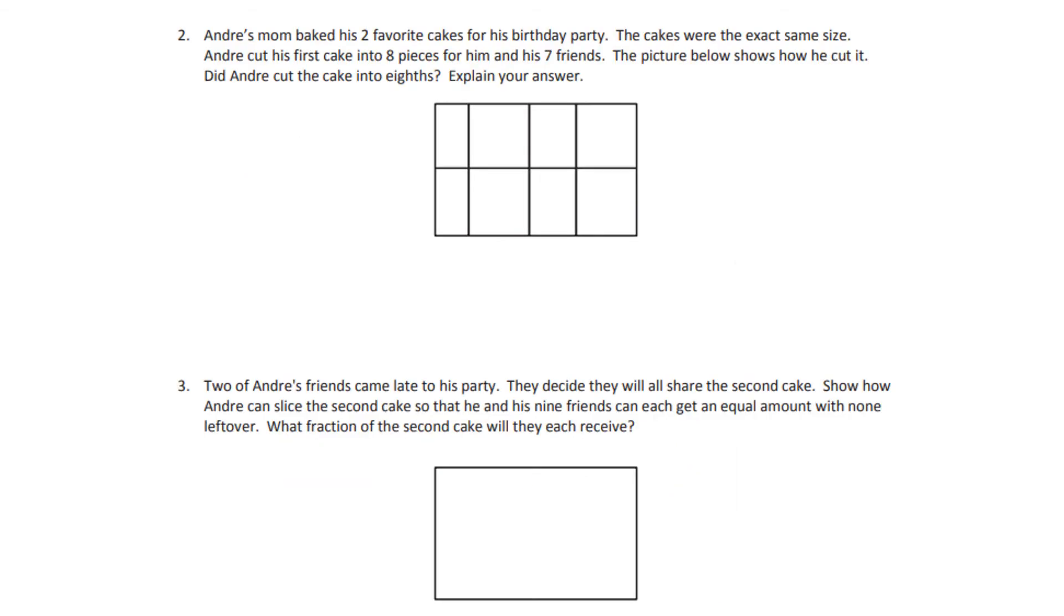For number two, it says Andre's mom picked two favorite cakes for his birthday. The cakes were the exact same size. Andre cut his first cake into eight pieces for him and his seven friends. The picture below shows how he cut it. Did Andre cut the cake into eighths? Explain your answer. So I want you to write, did Andre cut this piece of cake into eighths? Then I also want you to do number three.